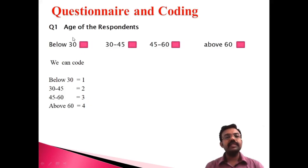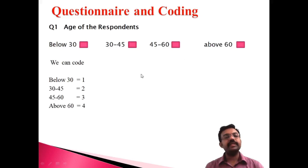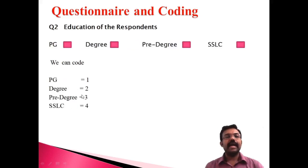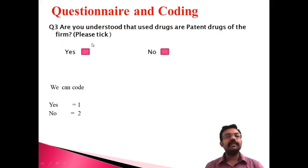So for the first question relating to age, we code below 30 as 1, 30 to 45 as 2, 45 to 60 as 3, and above 60 as 4. That is the arrangement of coding with four options: 1, 2, 3, 4. Similarly for education. The third question is a yes or no type question — for example, 'Do you understand the use of tax or patent tracks of the forms?' This is a dichotomous scale.